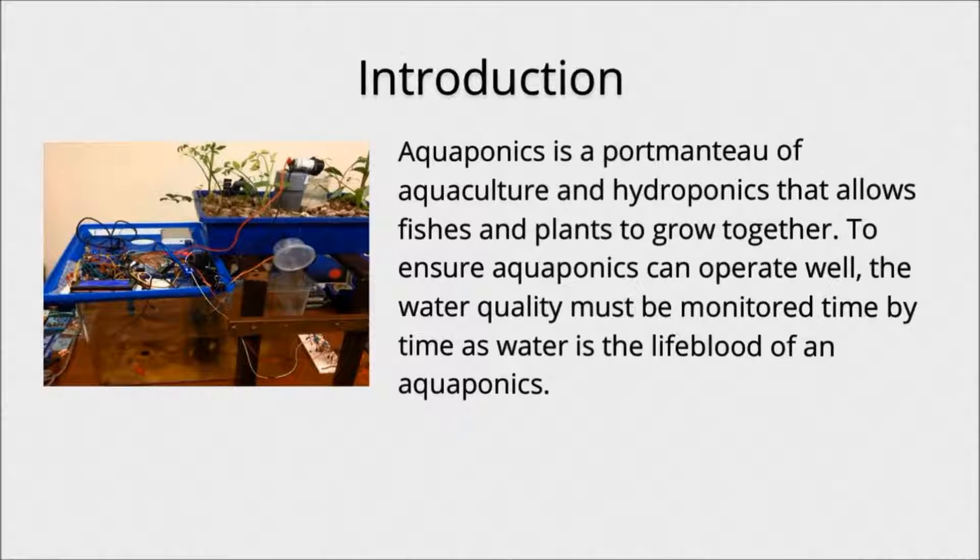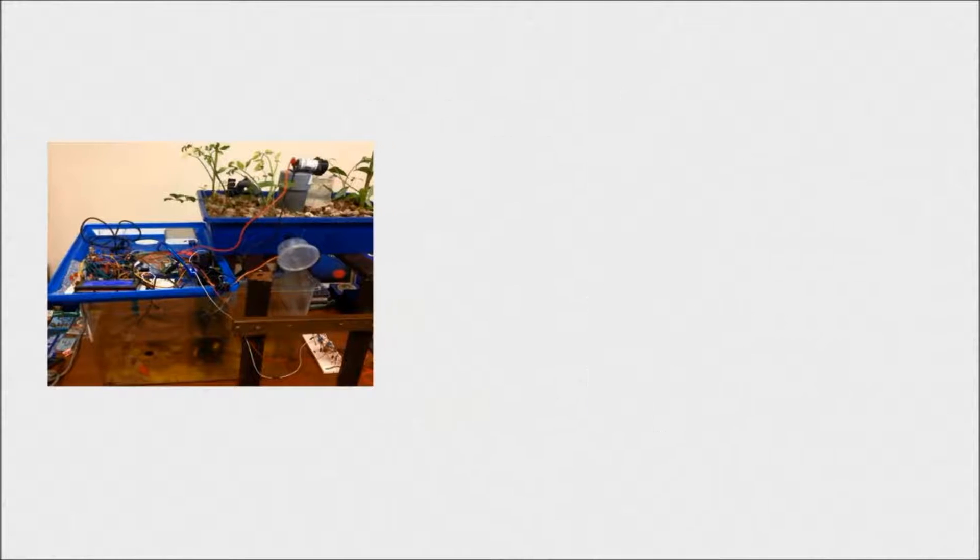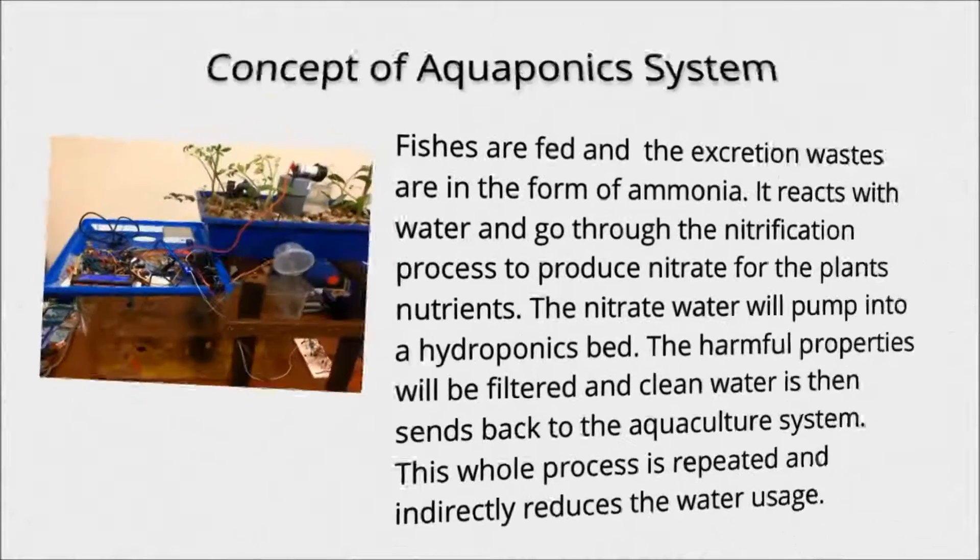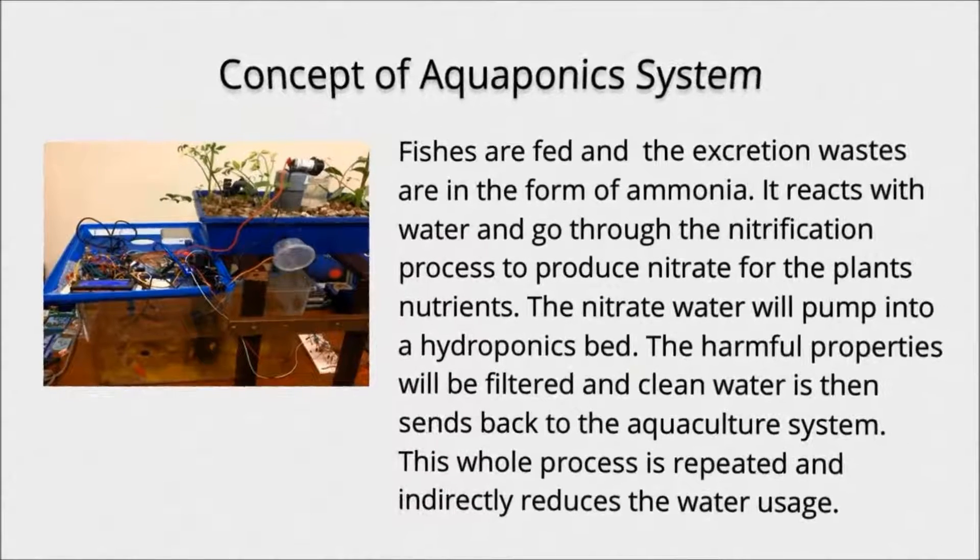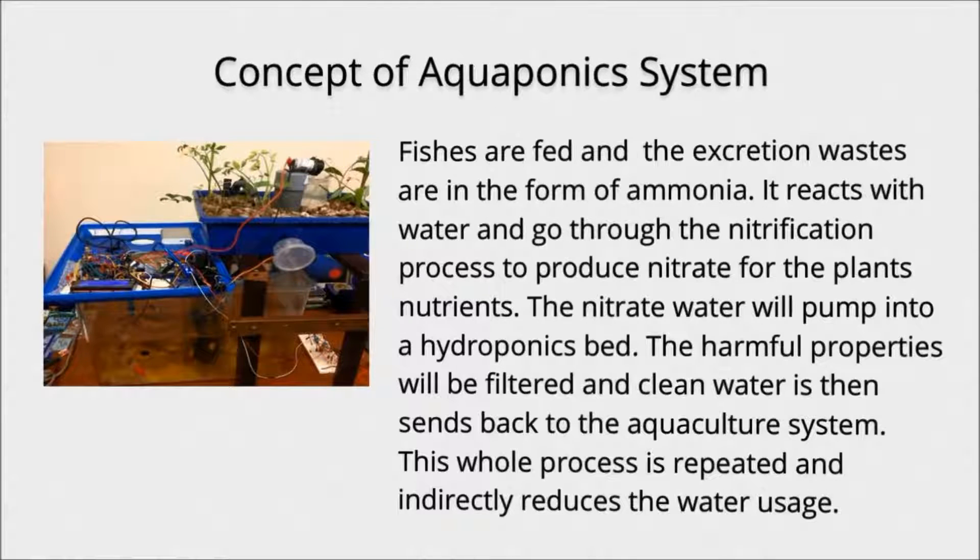To ensure aquaponics can operate well, the water quality must be monitored time by time, as water is the lifeblood of an aquaponics system. Fishes are fed and the excretion wastes are in the form of ammonia. It reacts with water and goes through the nitrification process to produce nitrate for the plant's nutrients. The nitrate water will pump into a hydroponics bed. The harmful properties will be filtered and clean water is then sent back to the aquaculture system. This whole process is repeated and indirectly reduces the water usage.